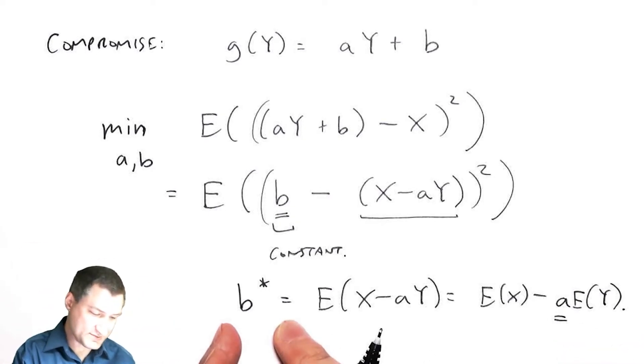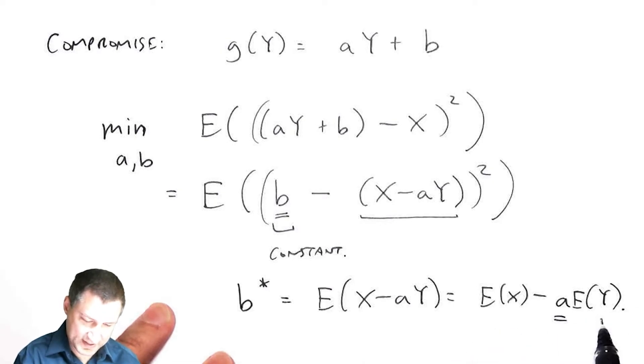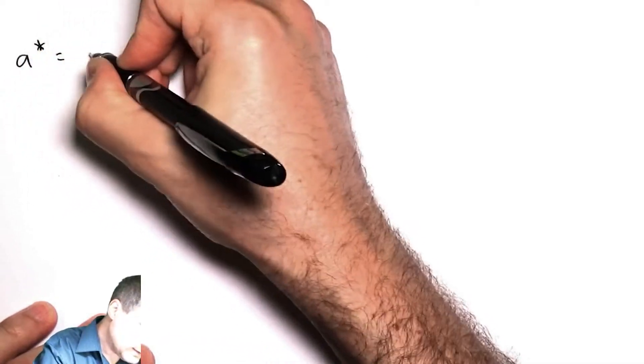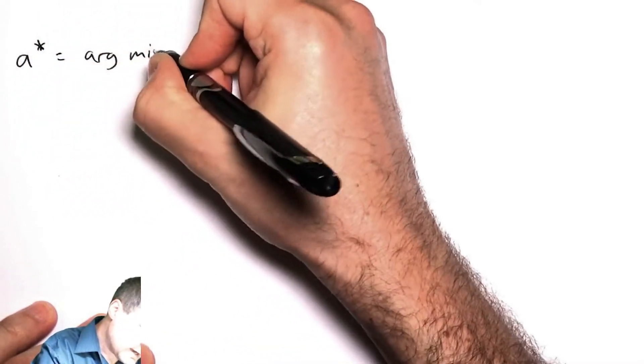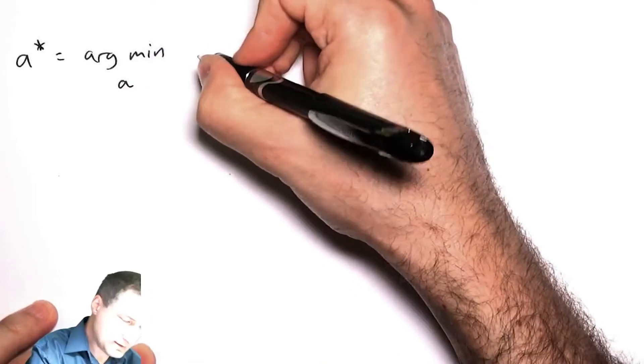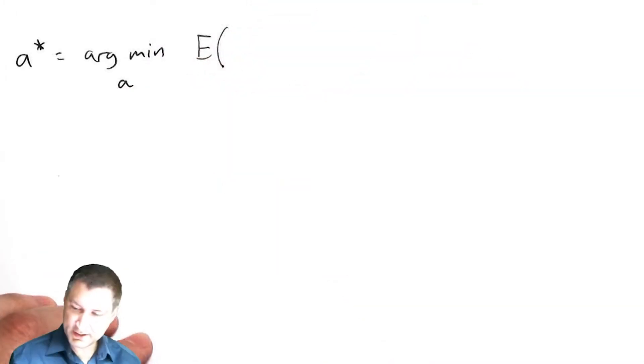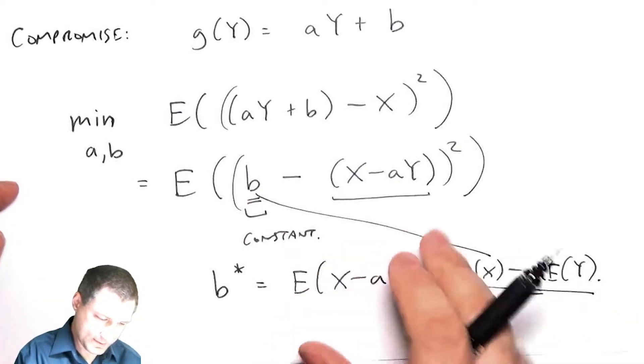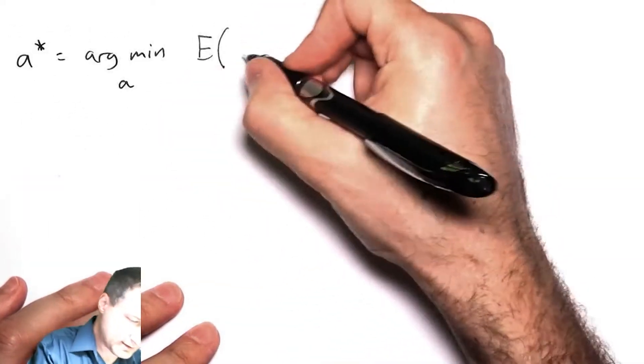But I don't know yet what a is. But now I know what b is, so I should actually plug this in and substitute. So my a that I'm gonna get is saying find me the best a that minimizes plugging in this b.